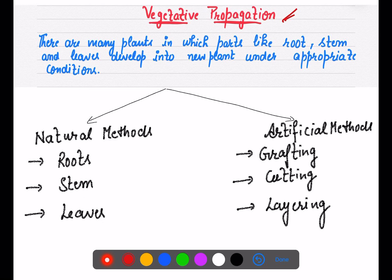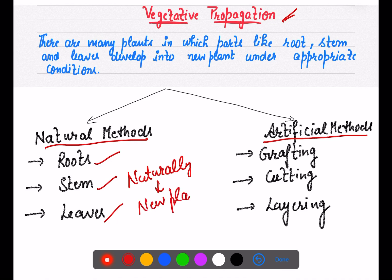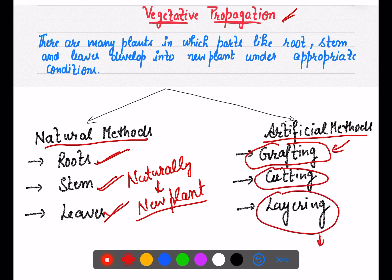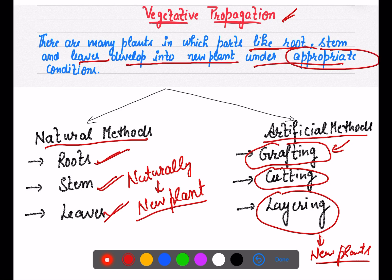Vegetative propagation can occur through natural methods and artificial methods. In natural methods, plant parts like roots, stems, and leaves naturally give rise to new plants without any disturbance. In artificial methods, like grafting, cutting, and layering, we can create a new plant with specific desirable characters. Roots, stems, and leaves all have the capacity to develop into new plants under appropriate conditions.